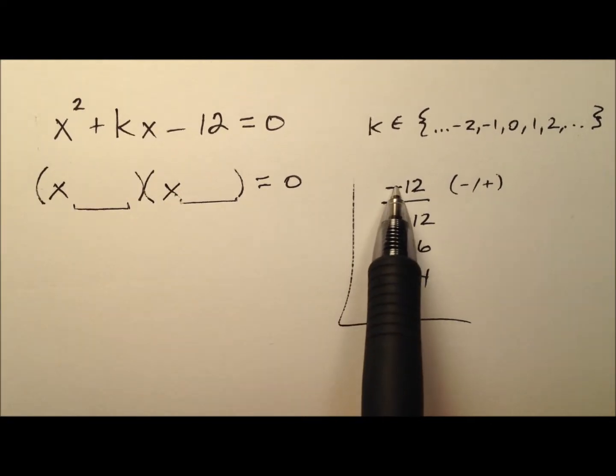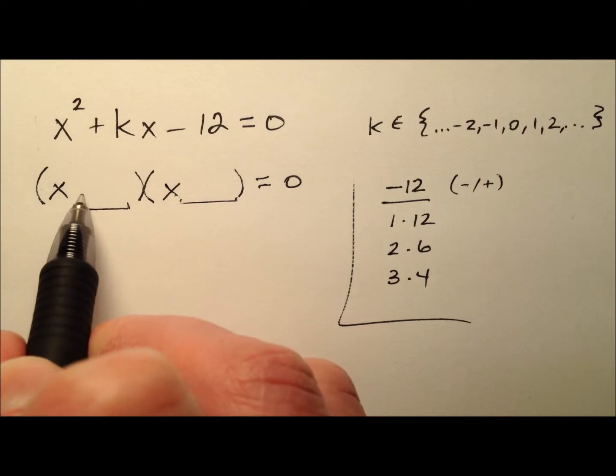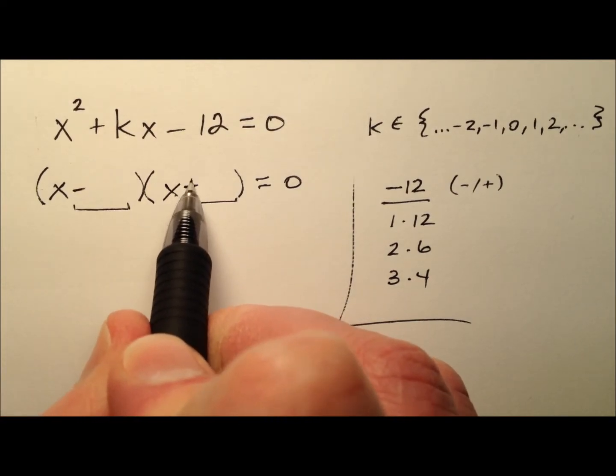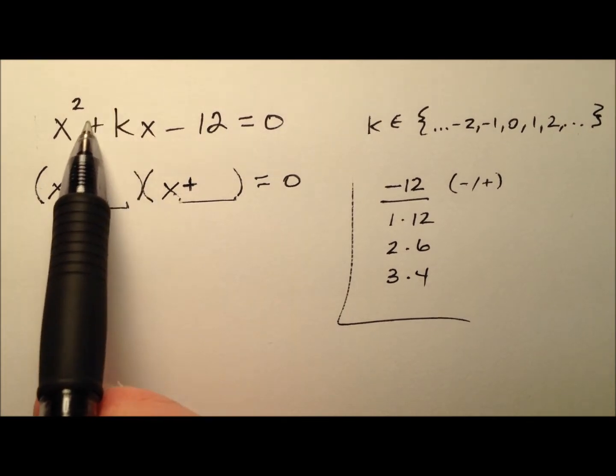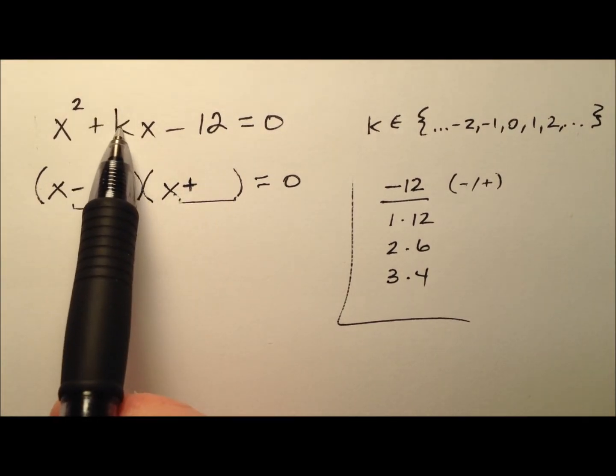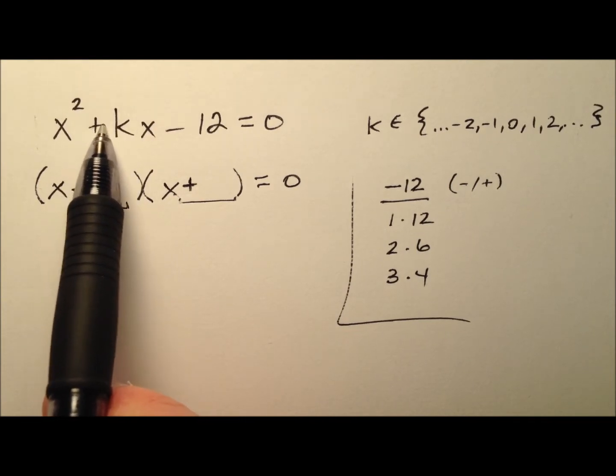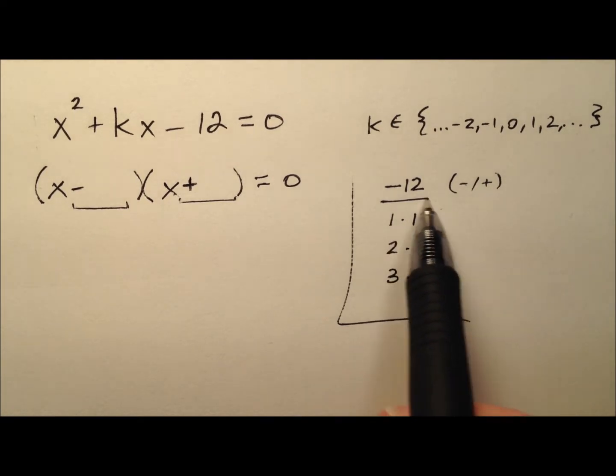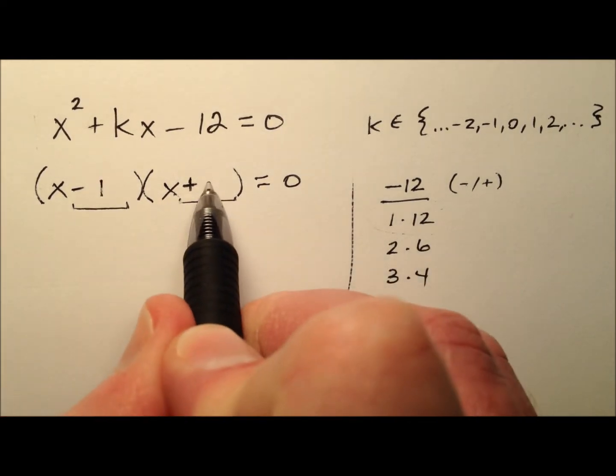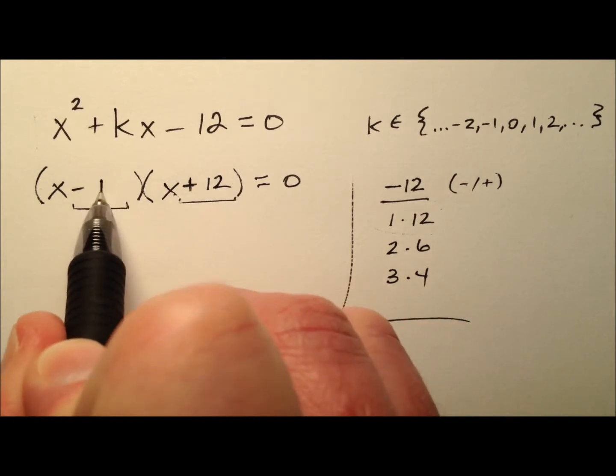If they multiply to make a negative, one is negative and one is positive. They add to make k, which could be positive or negative. Let's look at 1 and 12 first, put 1 here and 12 here, and see what happens.